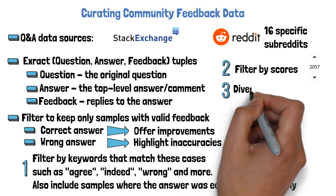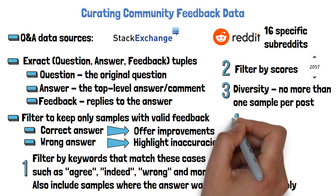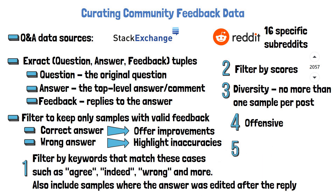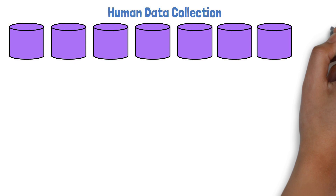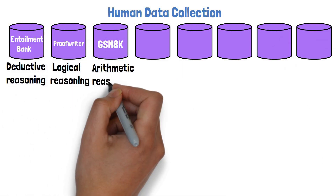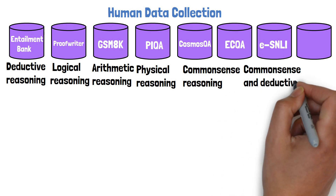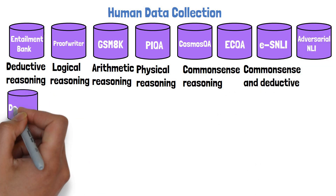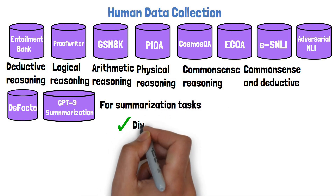Next is a filter for diversity, keeping no more than one sample per post. They also work to remove offensive content and out-of-format samples, for example when the feedback imposes further questions. To create the human annotated dataset, they work with multiple datasets covering a wide range of diverse tasks including deductive reasoning, logical reasoning, arithmetic reasoning, common sense reasoning, adversarial entailment, and also de facto and GPT-3 summarization datasets.